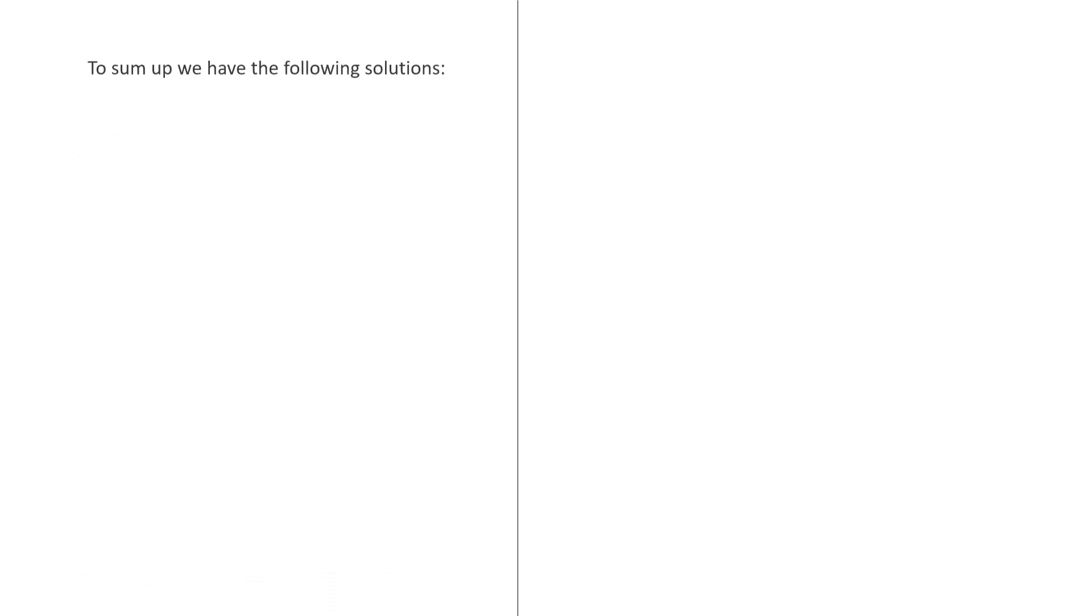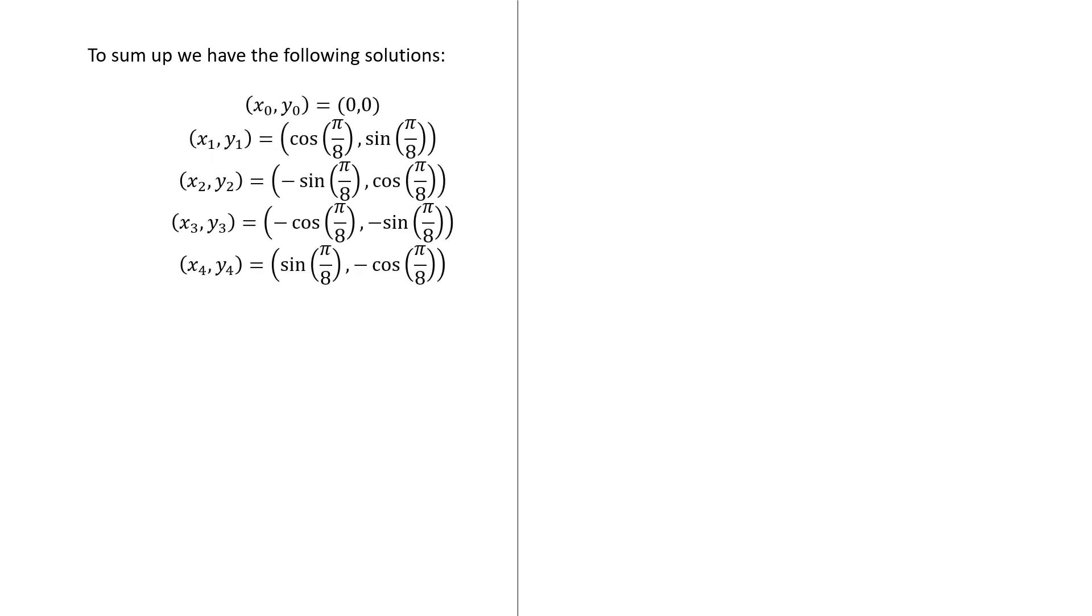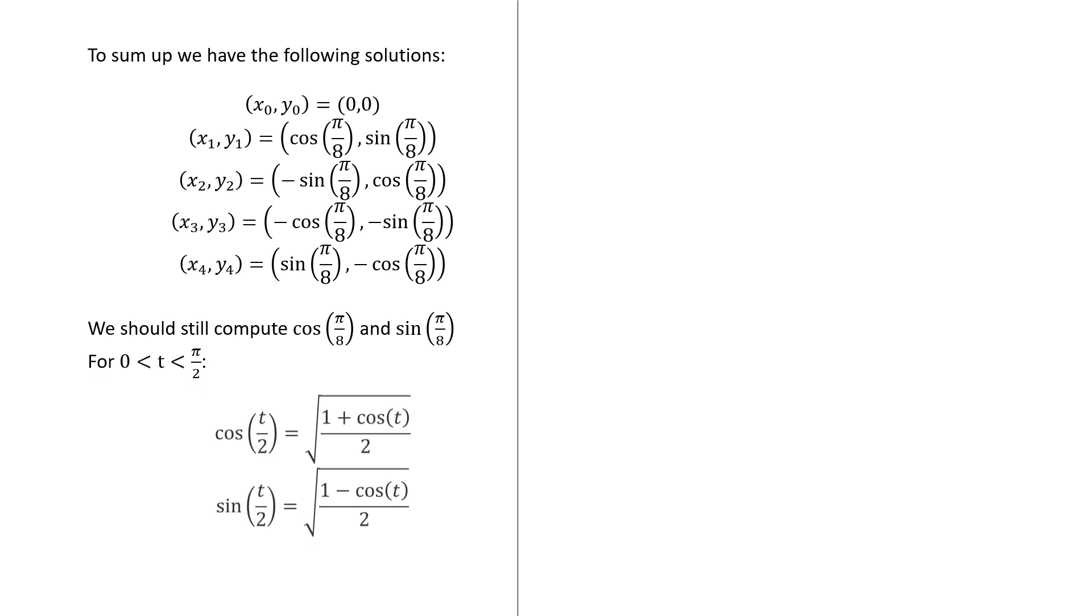To sum up, we found these five solutions. But it would be interesting to compute cos(π/8) and sin(π/8). You can do it using duplication formulas. So we have cos(t/2) equals the square root of (1 + cos(t))/2, and also sin(t/2) is the square root of (1 - cos(t))/2.